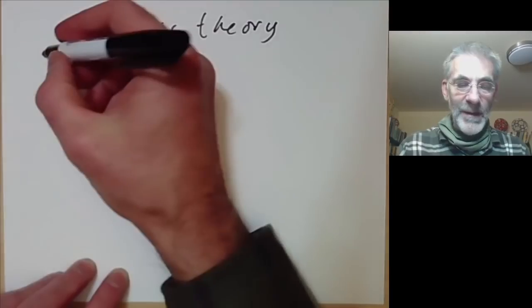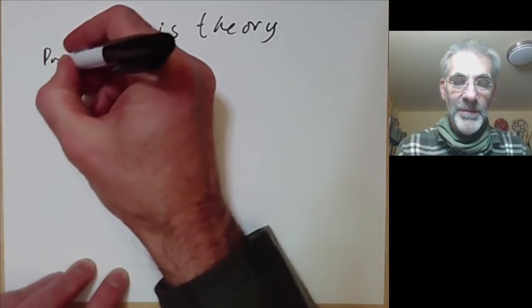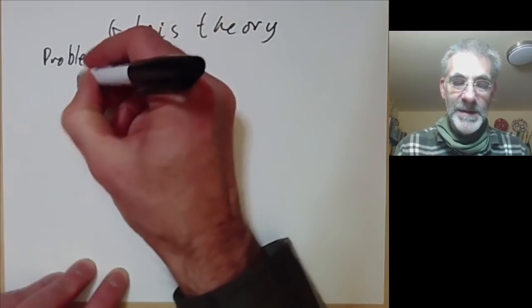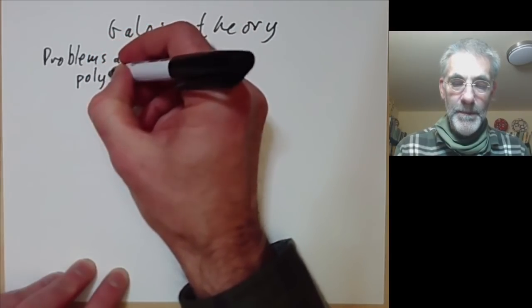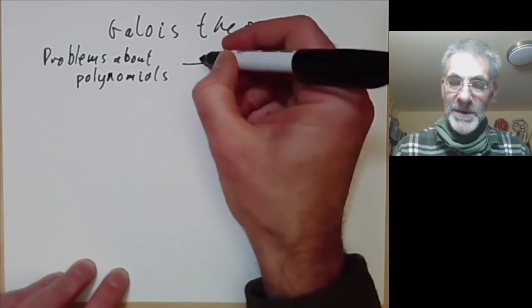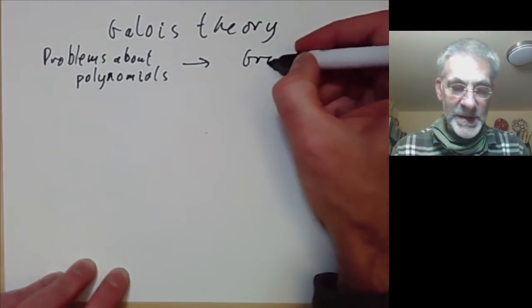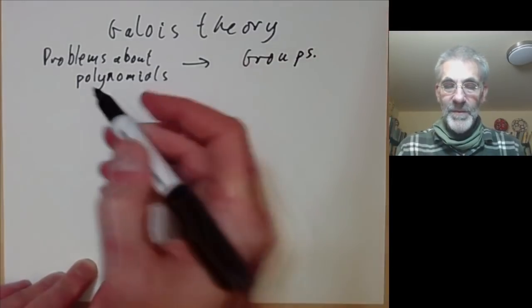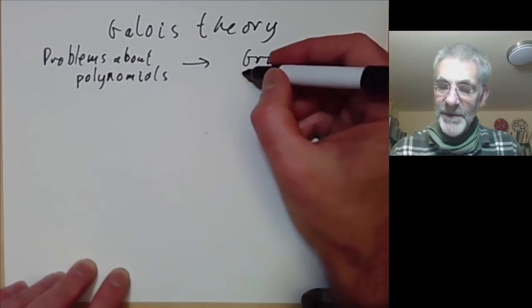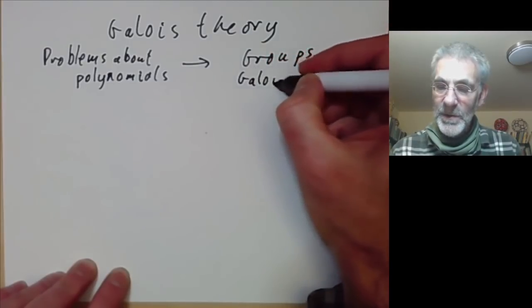Very briefly, Galois theory takes problems about polynomials and turns them into problems about groups. Roughly speaking, if you've got a polynomial you can get a group out of it which is called its Galois group.